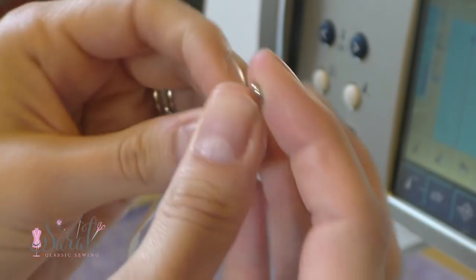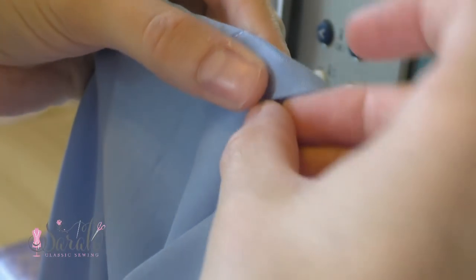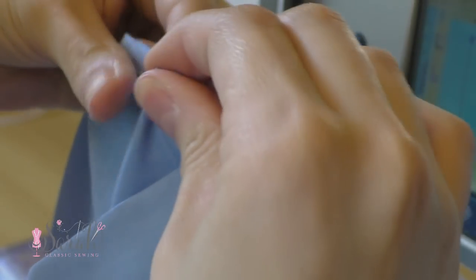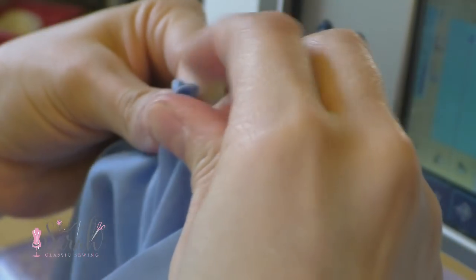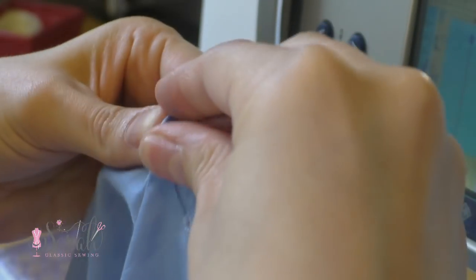Then I cut a piece of elastic to the appropriate size, reference the pattern, or better yet your little one if you have the option. And then I thread it through the casing using a safety pin.